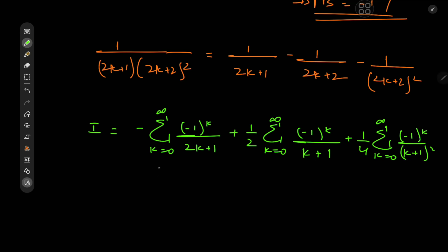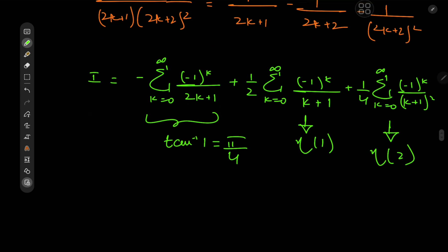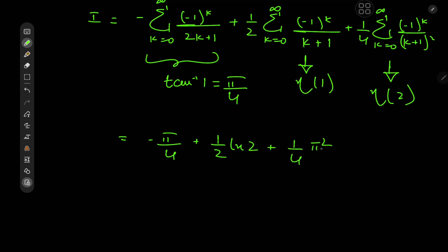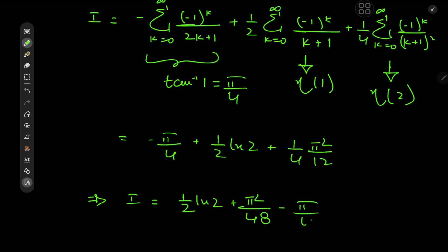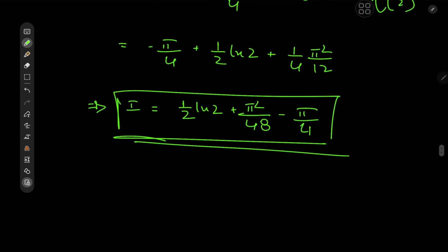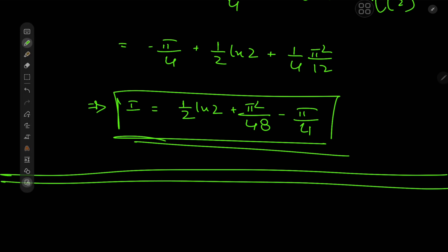We now have a collection of familiar sums. The first is arctan(1) = π/4. The second is the Dirichlet eta function at 1, which equals log 2. The third is the Dirichlet eta function at 2, equal to π²/12. So we get I = −π/4 + (1/2)log 2 + (1/4)(π²/12), which gives the final answer: I = (1/2)log 2 + π²/48 − π/4. Wherever there are log-trig or log-inverse-trig integrals, we seem to get π's and log 2's — fascinating! Hope you enjoyed the video; be sure to like and subscribe.